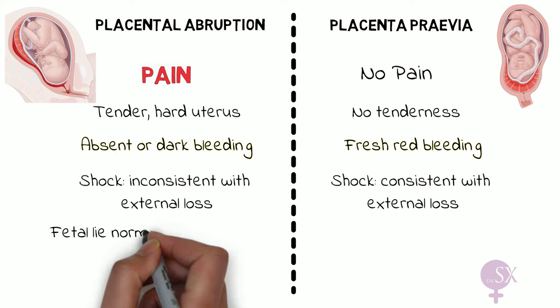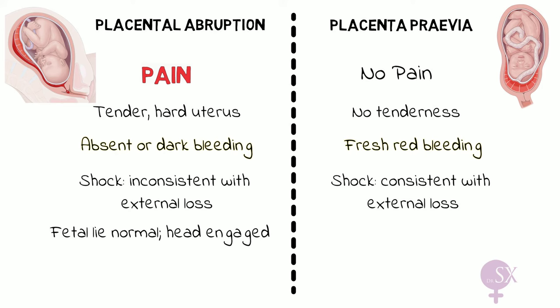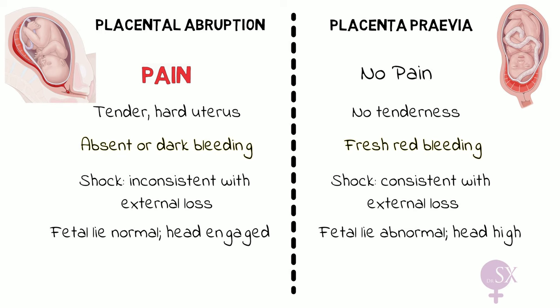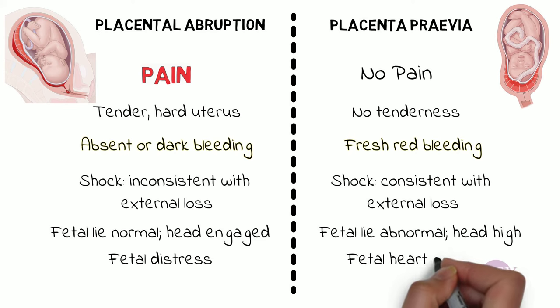In placental abruption the fetal lie is normal and the head is engaged. In placenta previa, because the placenta is in the way, there will be an abnormal lie of the fetus and the head will be high. In placental abruption, since the placenta is detaching from the uterine wall and blood supply to the baby is affected, fetal distress may be observed — and if the placenta completely detaches, the fetus may also be dead. In placenta previa it is merely the placenta bleeding, so the fetal heart will be normal.